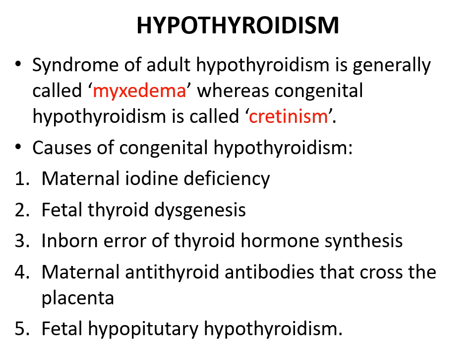There are multiple causes of congenital hypothyroidism. Important causes include: maternal iodine deficiency, fetal thyroid dysgenesis, inborn error of thyroid hormone synthesis, maternal antithyroid antibodies that cross the placenta, and fetal hypopituitary hypothyroidism.